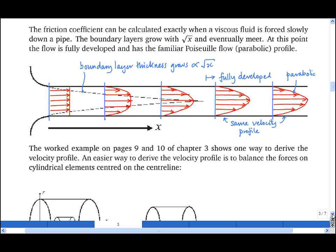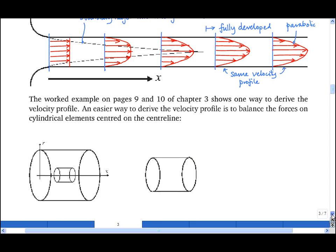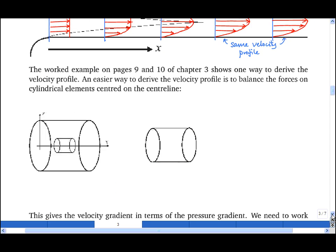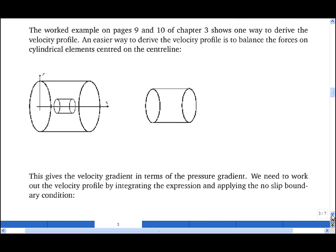An easy way to derive the velocity profile is to balance forces on cylindrical elements centered on the centerline. So I define my axes. x is the distance along the centerline, r is the radial distance away from the centerline. The pipe itself has radius R, and I'm going to consider an element of radius r.